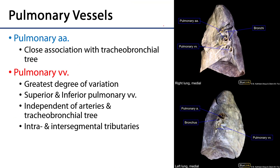These pulmonary vessels are kind of the exception to the convention — pulmonary arteries, while they conduct blood away from the heart, are carrying deoxygenated blood, hence why they are color coded blue here. These pulmonary arteries tend to be in very close association with the primary bronchi at the root of the lung, and they are going to mirror that tracheobronchial tree as they go out to capillary beds surrounding the alveoli.